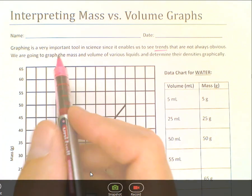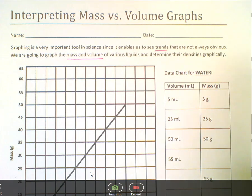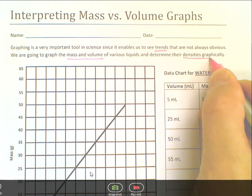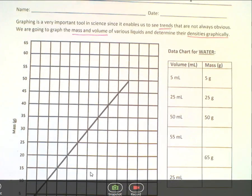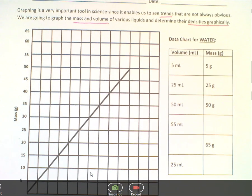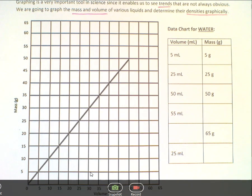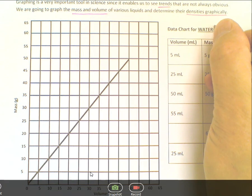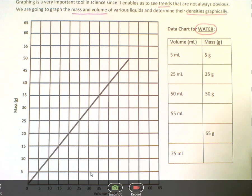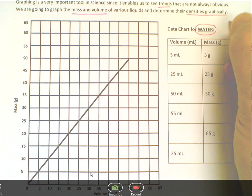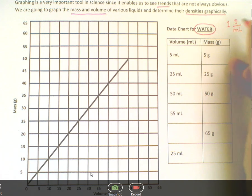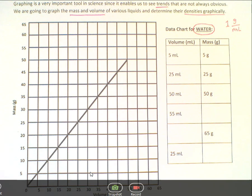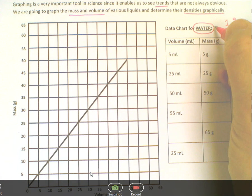We're going to graph the mass and volume of different liquids and determine their densities graphically. It's a good skill. It will tie into what you're going to be doing in your grade 9 math courses as well. So what we're going to look at first is a graph and a data chart for water. Now from our previous experiments, we know that the density of water is approximately 1 gram per milliliter.